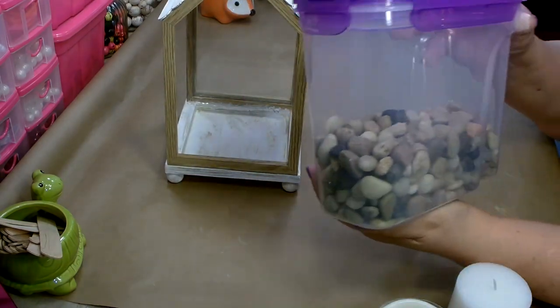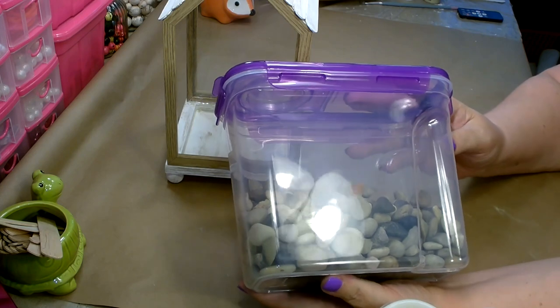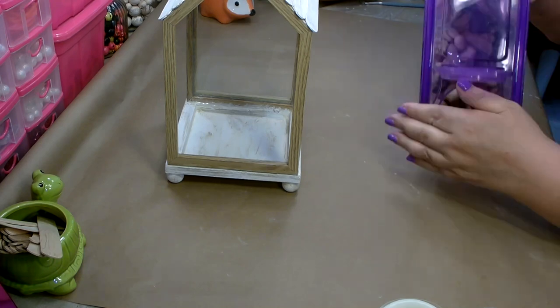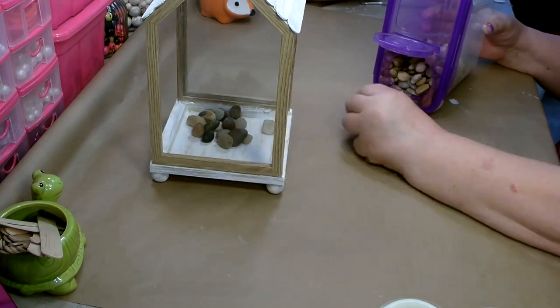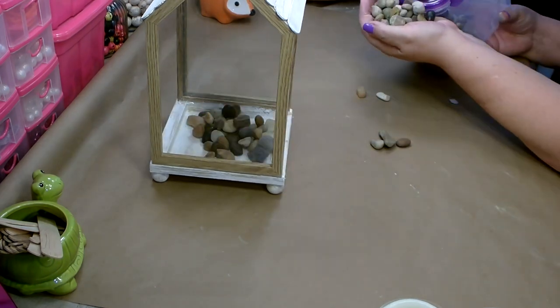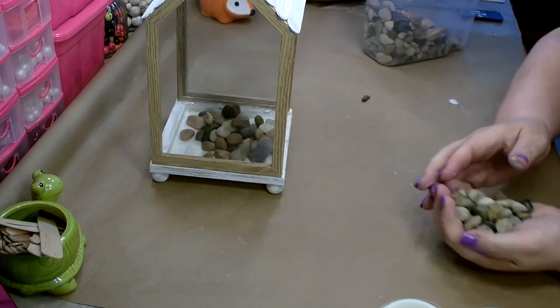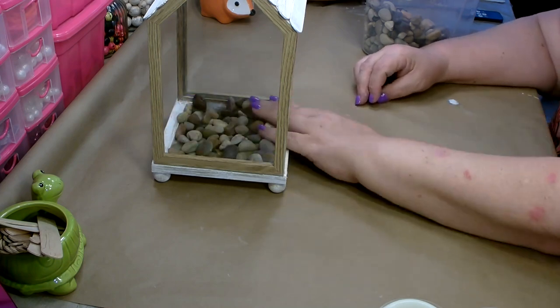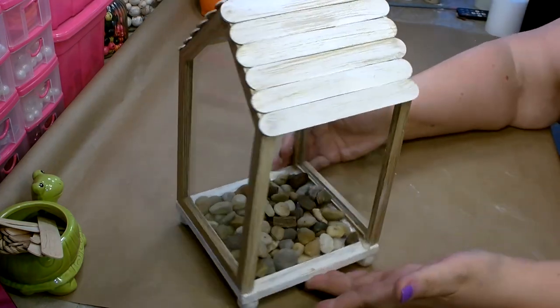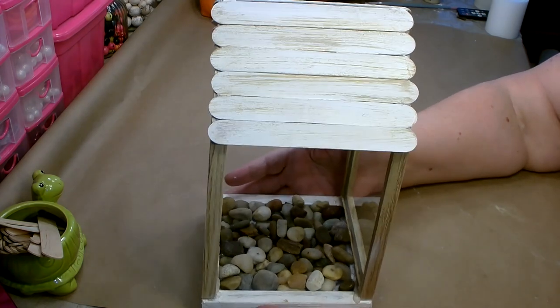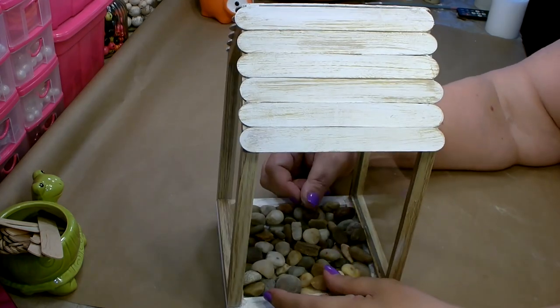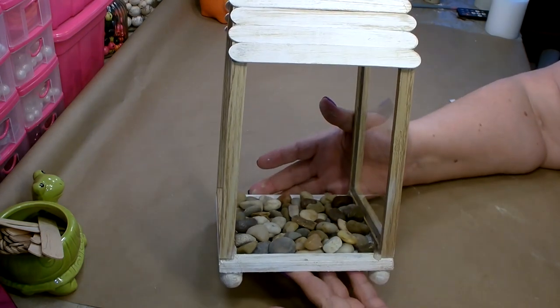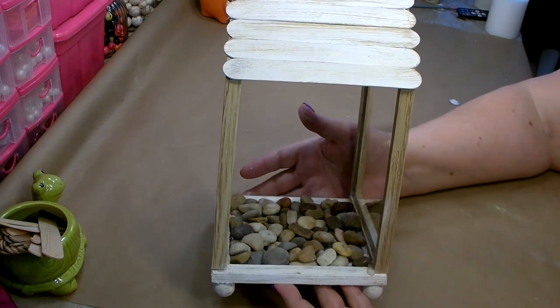I have these really pretty natural colored rocks that I got from Dollar Tree. I'm going to use this as my base. So I have my base in, I just filled in with the pretty colored rocks. I really like them. I think they complement the coloring of the lantern very well.